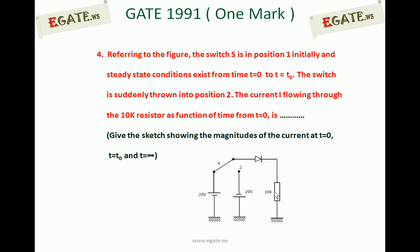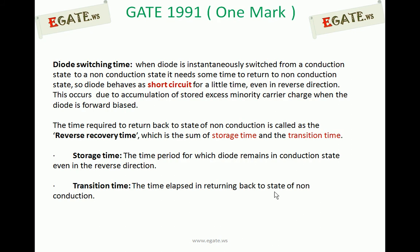We must draw the current waveform flowing through 10 kilo ohms during the forward bias to reverse bias transition. When a diode is instantaneously switched from conduction state to non-conduction state — that is forward bias to reverse bias — it needs some time to return to the non-conduction state. Meanwhile, the diode behaves as a short circuit for a little time even in the reverse direction. This occurs due to accumulation of stored excess minority carrier charge when the diode is forward biased.